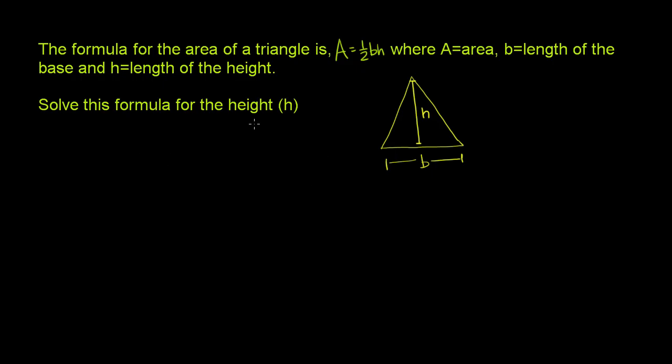Now they want us to solve this formula for the height. So the formula is area equals one-half base times height, and we want to solve for h. We essentially want to isolate the h on one side of the equation. It's already on the right-hand side, so let's get rid of everything else on the right-hand side. So we could do it—well, I'll do it one step at a time. We could kind of skip steps if we wanted to.